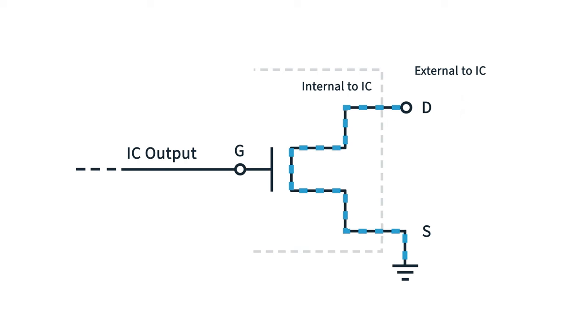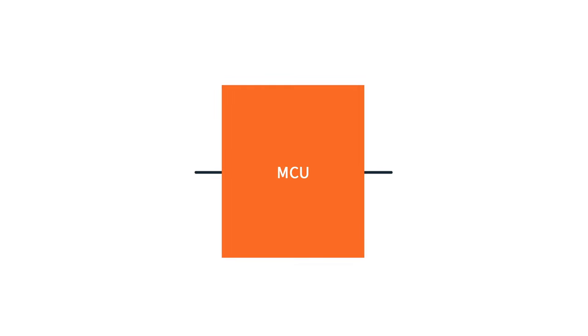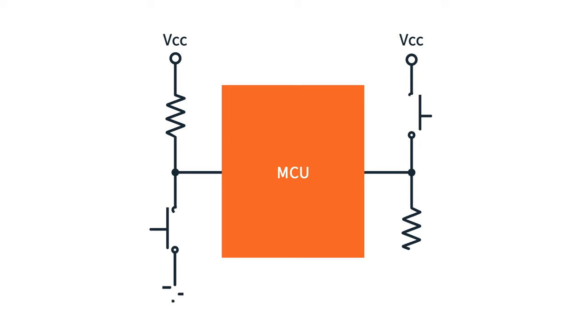If a low voltage is applied to the gate, then the switch opens, and there's a high impedance between the open drain and ground. Just like with the internal BJT, in a high impedance mode, if you want the output at a high or low voltage, you'll need a pull-up or pull-down resistor. Check with your datasheet to see if this is provided internal to the IC you're working with or not. Pull-up resistors are significantly more common than pull-down resistors.